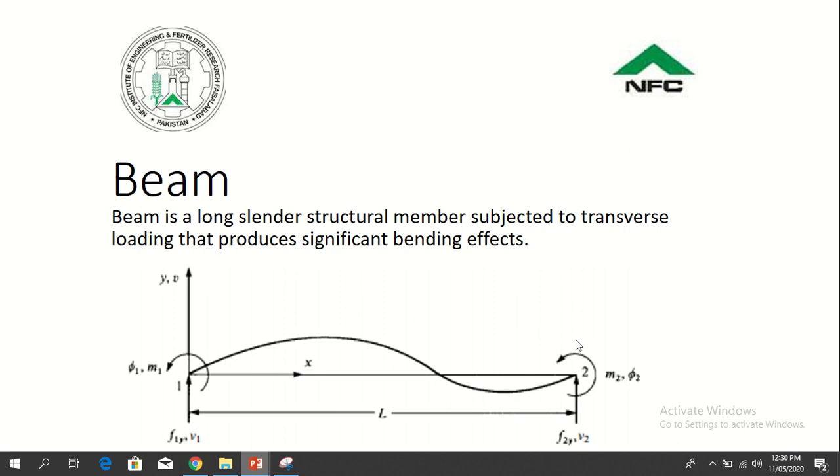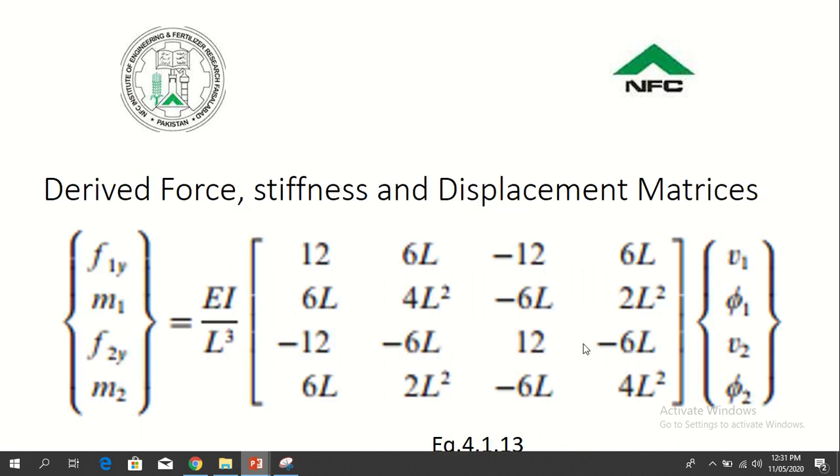Similarly at node 1, m1 and f1 are the loads, and v1 phi1 are the displacements. V1 is a vertical displacement and phi1 is rotational displacement.